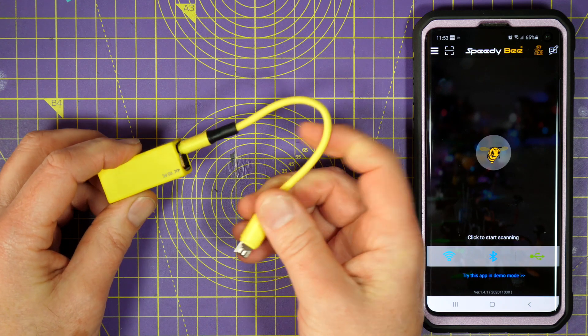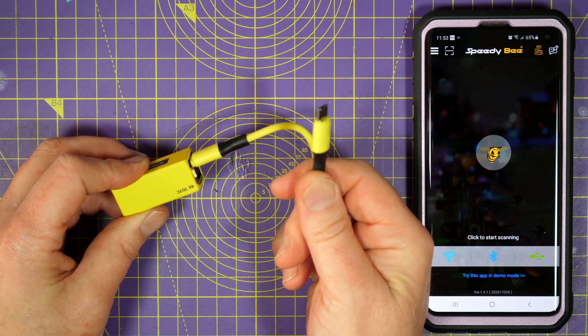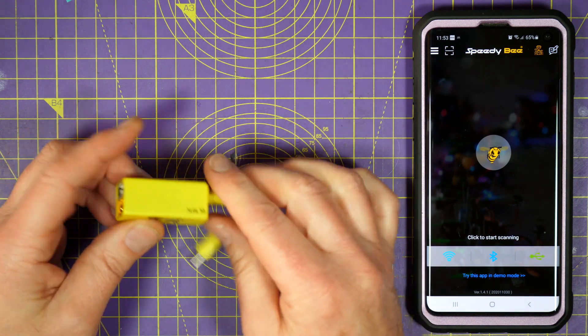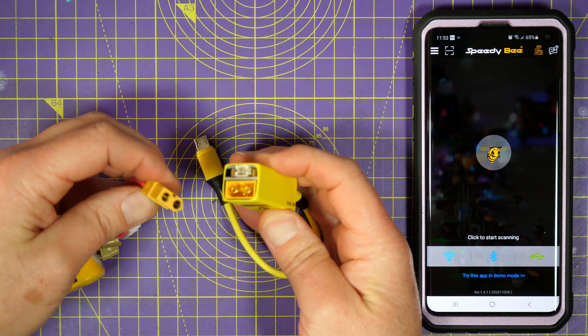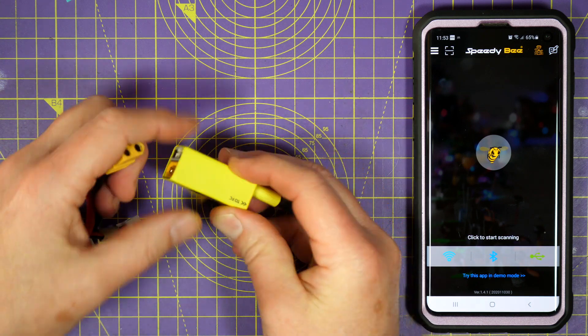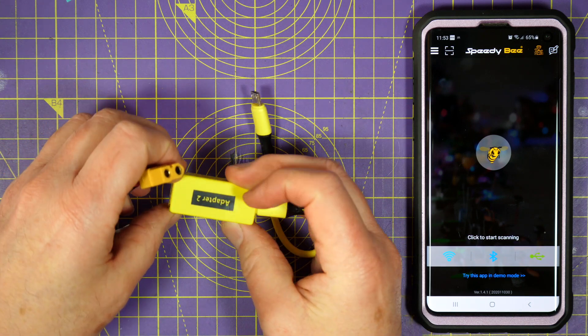So what you do is you plug this end into your flight controller and then you use your flight battery in this XT60 connector to power the little adapter up.